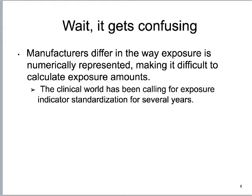Unfortunately it gets confusing. They gave us this exposure indicator — thank you, nerds who write computer programs — but every single manufacturer out there, Siemens, Kodak, GE, Fuji, all used different exposure indicators based on completely different math. This made a complete muddle for technologists. If you're working on a Fuji machine and shoot an exam, that exposure indicator number is completely different from a Siemens machine — one goes smaller as you overpenetrate, the other gets larger. They're completely different scales.